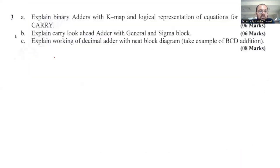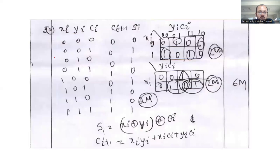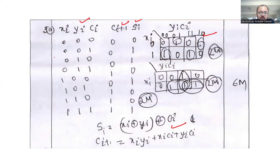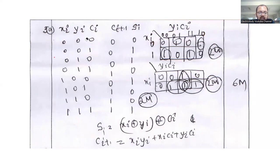Question number 3a: explain the binary adder with K-map and logical representation of the equation for sum and carry. Explain with a suitable example. The inputs for sum and carry are given; use K-map to get the solution in the required form. The example used is a full adder.